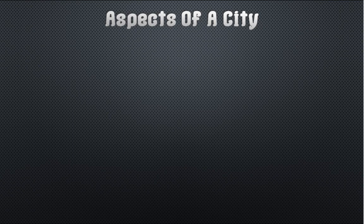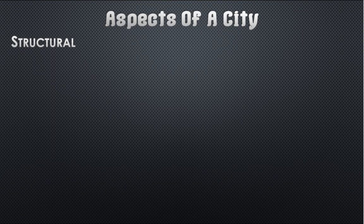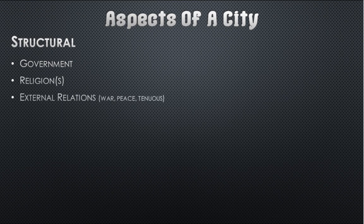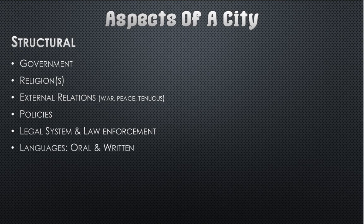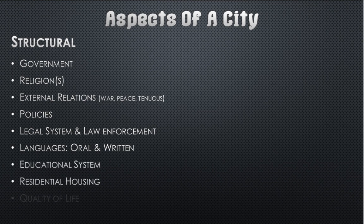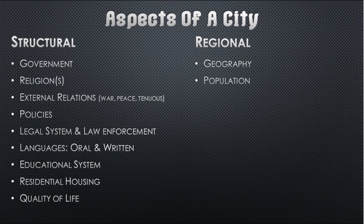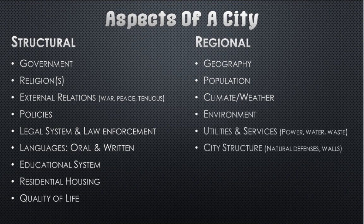When I say aspects of a city, that's pretty broad. I've divided them into four categories — structural, regional, economical, and cultural — and we'll be discussing these in detail. Structurally, you're going to need all of these things to keep your city running. It's not going to be perfect or run smoothly because that doesn't happen in real life either, but these are the essential categories.